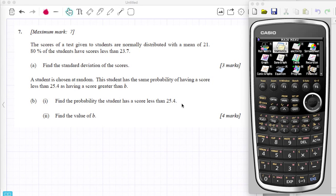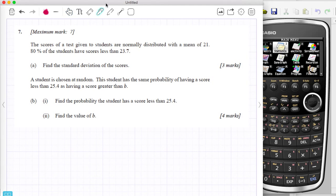I've got another graphic calculator probability question here and it's to do with everyone's favourite topic, the normal distribution. So obviously it says here it's normally distributed.